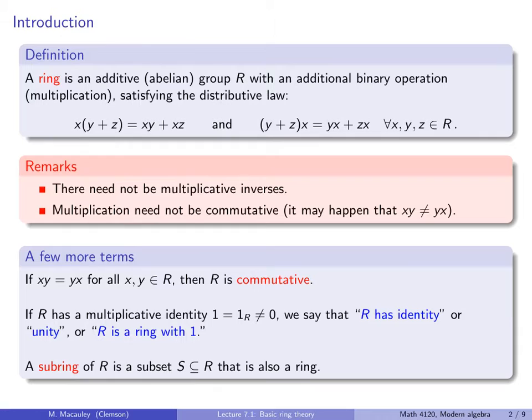A subring of R is a subset of R that is also a ring — it must be both a subgroup of the additive group and closed under multiplication.